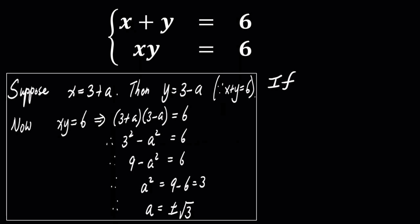For a equals square root of 3, we find the pair x, y equals 3 plus square root of 3, 3 minus square root of 3.